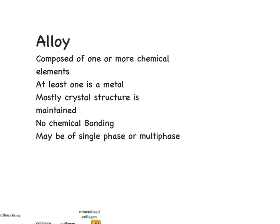Let's start off talking about alloys. Basically, alloys are composed of one or more chemical elements, same as composites, but the key difference is that in the case of alloys, at least one among the components should be a metal. This sort of constraint is not present in composites.